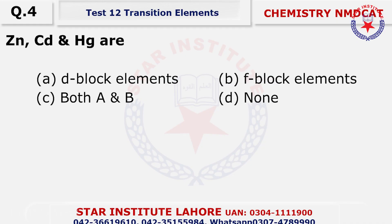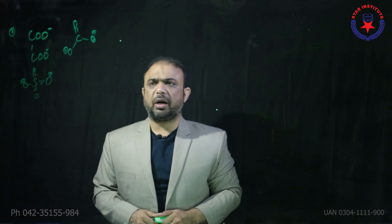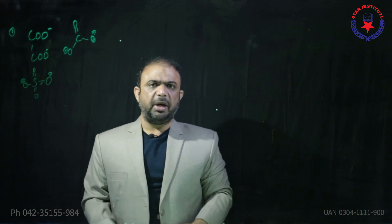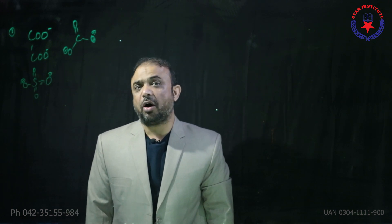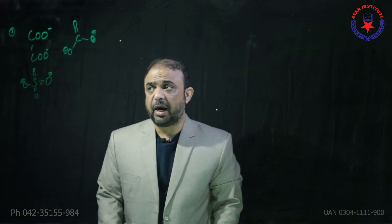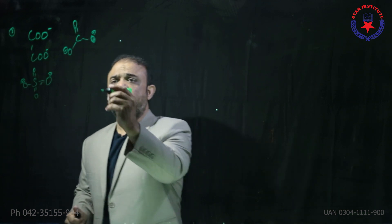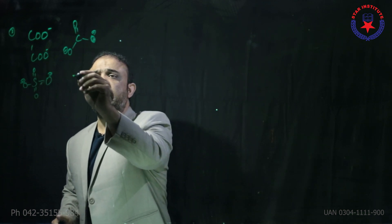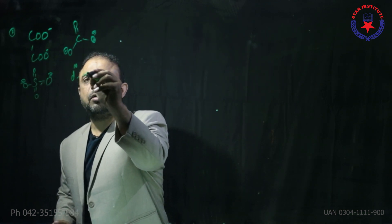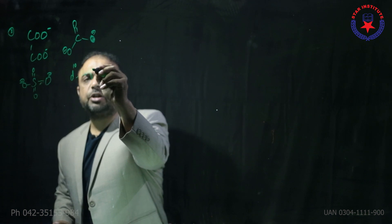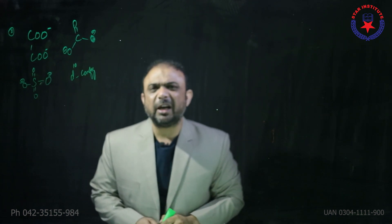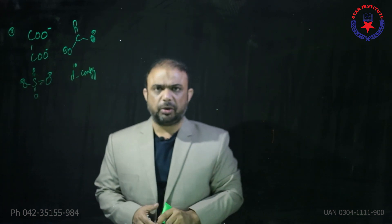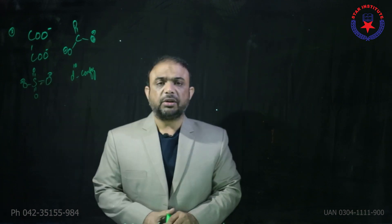Question number four: zinc, cadmium, mercury are called as D block elements, and in my class the point is that these are also called as non-typical transition elements. Why? Because they have D10 configuration — completely filled orbital — so the choice is alpha.